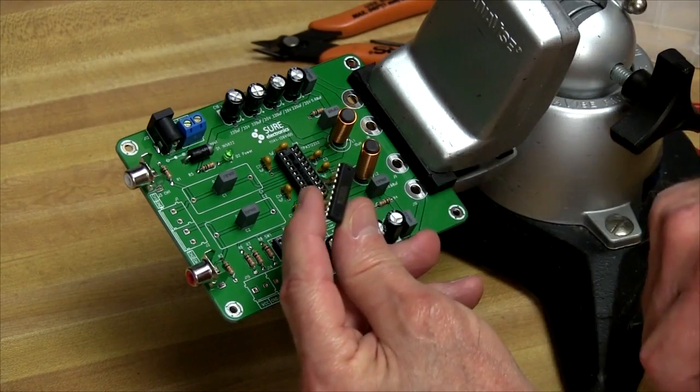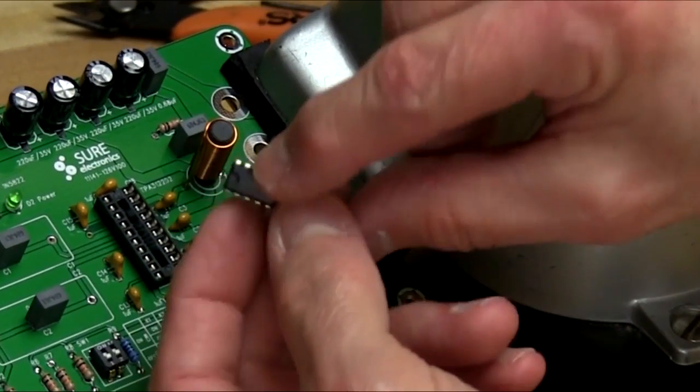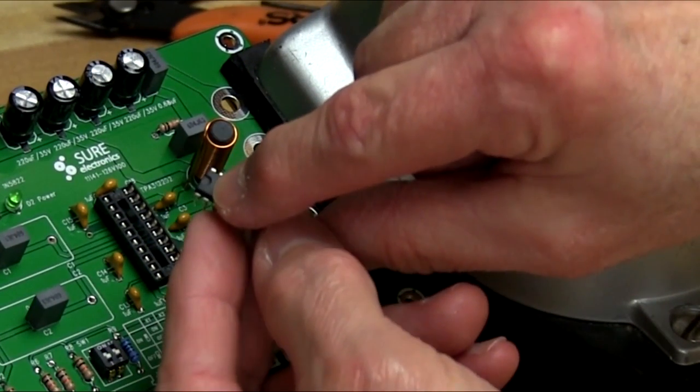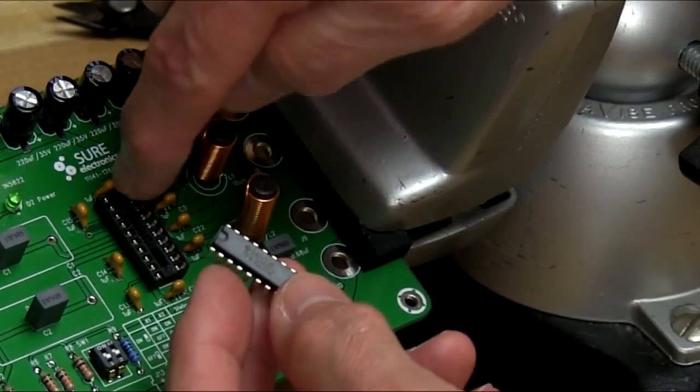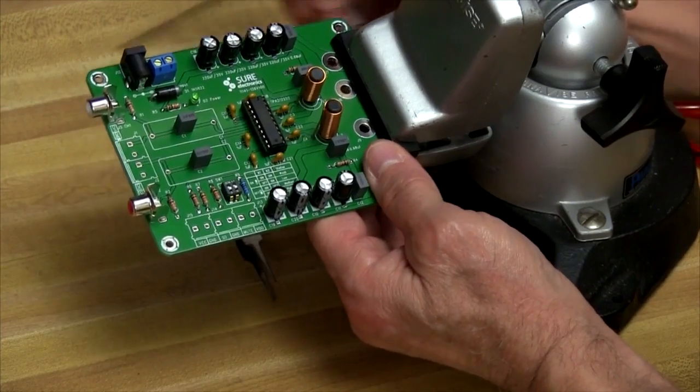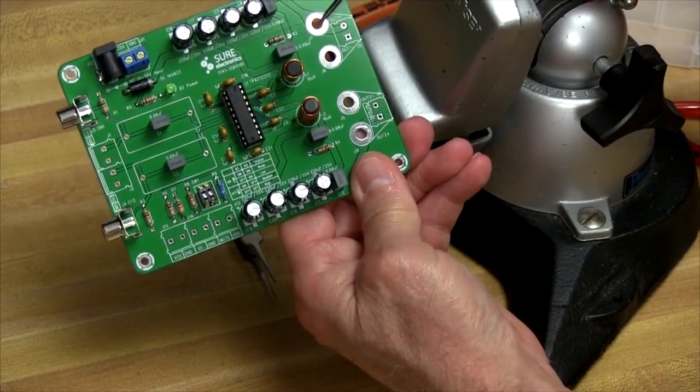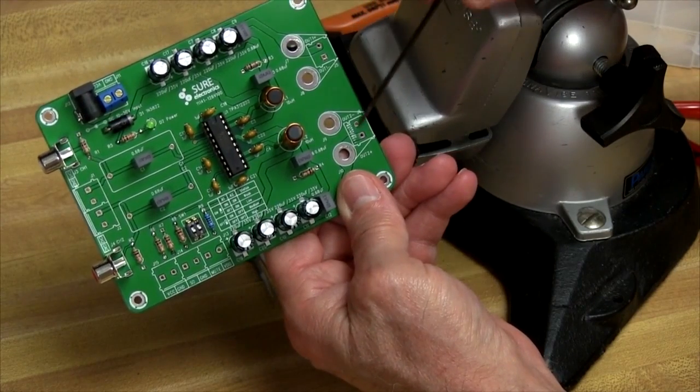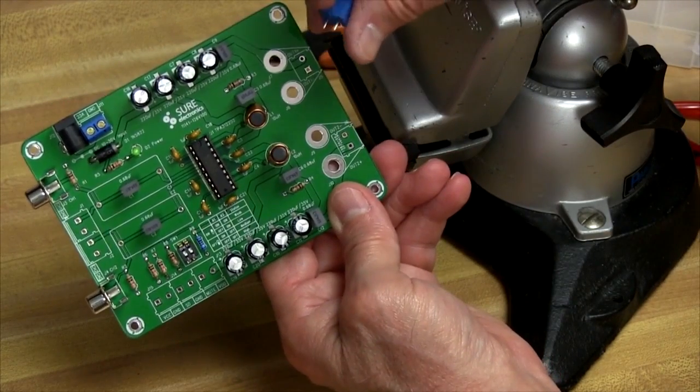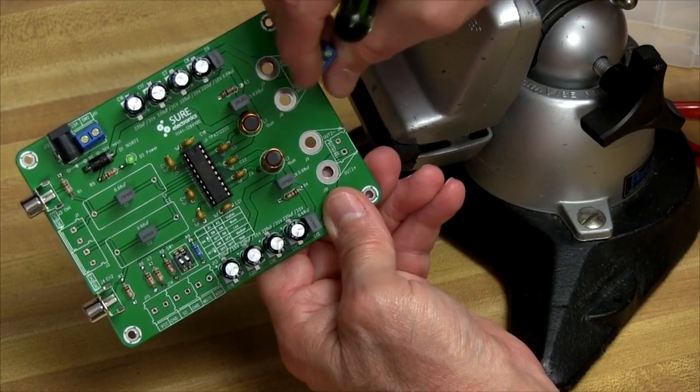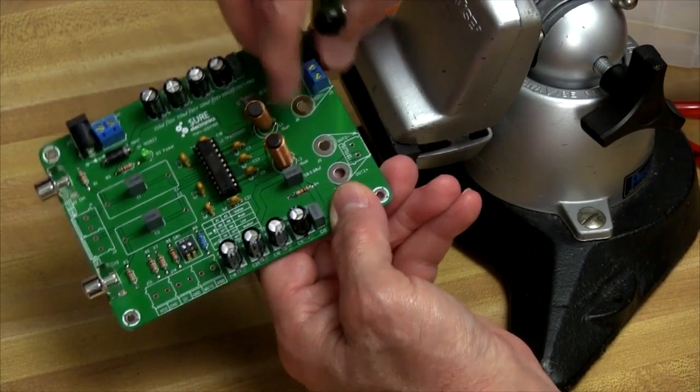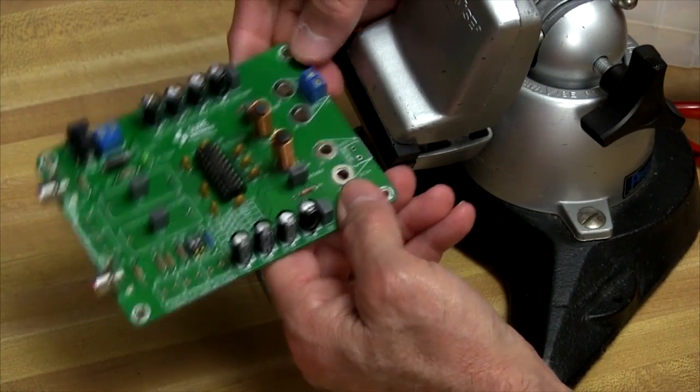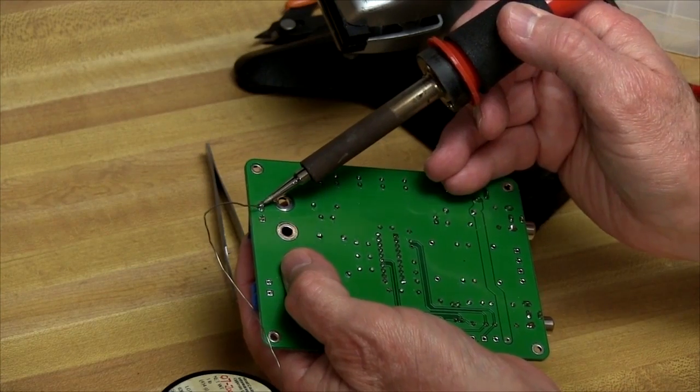Now I'll install the integrated circuit. Notice the little notch on the end - match that with the notch on the socket. All that's left is output connections. There are holes for screw terminals, and holes for barrier strips like I used on the power input. I have some of those, so that's what I'll use.